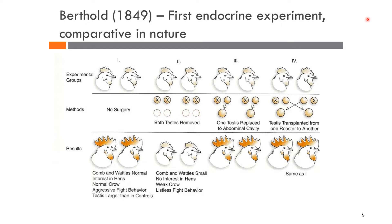The results showed that the castrated group were less aggressive, less masculine, and had lost their interest towards hens. Also, in terms of the common wattle, the wattles were considered to be small. For the other group — the roosters that had re-acquired their testicles — they behaved normally as any other uncastrated rooster and also had a normal common wattle.